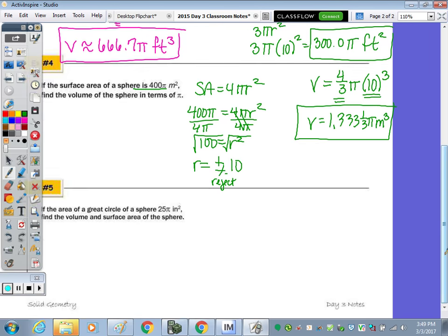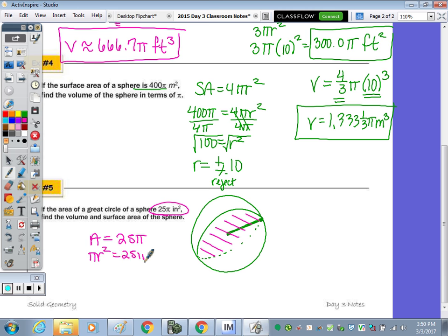And then last, it says, if the area of a great circle of a sphere is 25π, so if we draw a sphere, let's practice drawing a sphere. I draw a circle, and then I draw the backside of another circle here in the middle, and then I make this part dotted. So the radius of that sphere, if the area of the circle, so it says the area of this circle is 25π, and area is found by πr², we know that our radius is 5, because 5² is 25. So with a radius of 5, we're going to find the volume and surface area of the sphere.